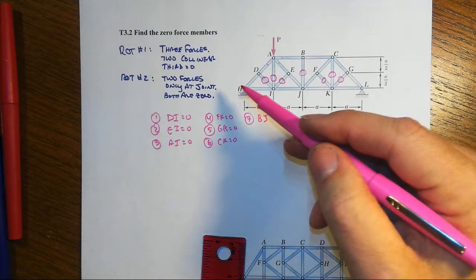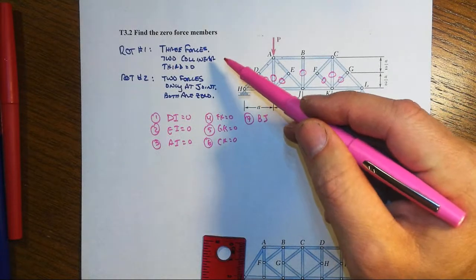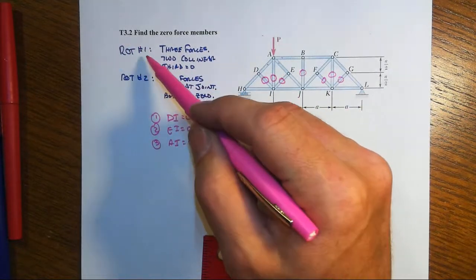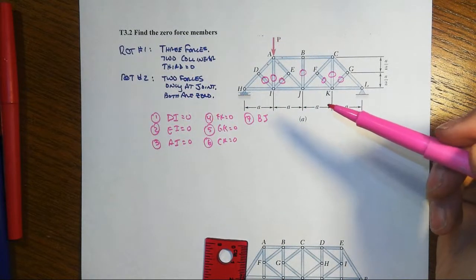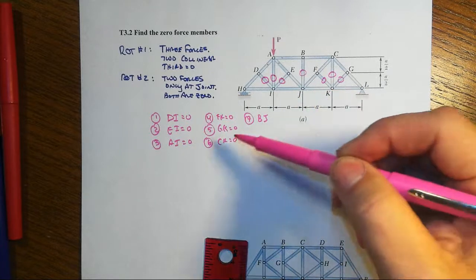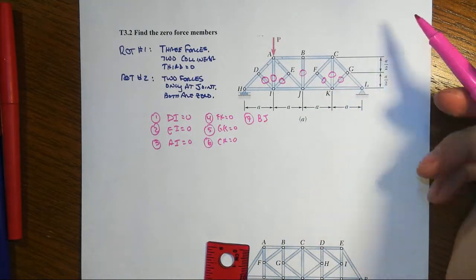Now, after going through all this, if you're saying, well, I get the pattern matching, but I don't understand why, go to T3.1, where we prove these rule of thumbs, number one and number two, and you need to be able to not only identify these this quickly, but also be able to go and prove why these values are the way they are.